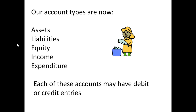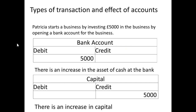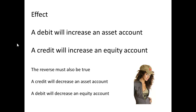Every one of these accounts can have debit or credit entries. Let's recap: if we start a business by investing £5,000 and opening a bank account, we debit the bank account with £5,000 and credit a capital account with £5,000. We've increased the asset of cash and increased capital. A debit increases an asset account; a credit increases an equity account — which means the reverse is also true: credits decrease assets and debits decrease equity.